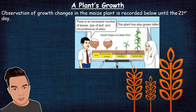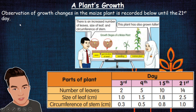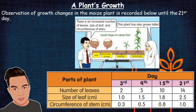Now I want to share with you how to record an observation. This observation is about growth changes in the maize plant after 21 days. We are going to use a table to record this observation. The first column is 'part of the plant' and the second column is the 'day'. There are three parts of the plant that we are going to observe: the number of leaves, the size of the leaf, and the circumference of stem.